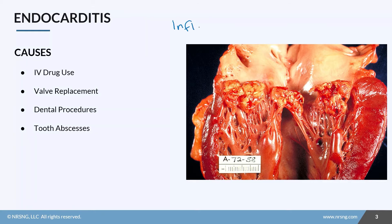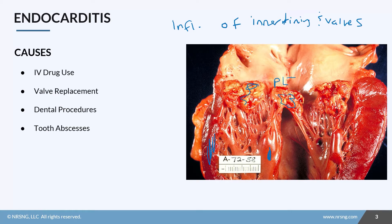Endocarditis is inflammation of the inner lining and the valves of the heart. You can see in this cross section how inflamed and red the inner lining is, and there is bacterial vegetation building up on the valves — clumps of platelets, white blood cells, and other immune cells getting stuck to the valves, making it difficult for the heart and valves to work correctly.